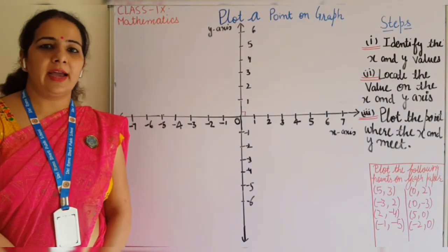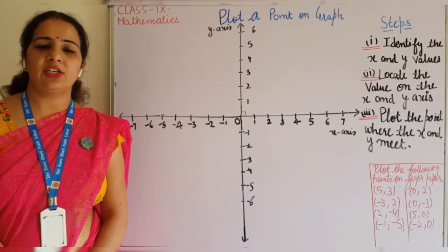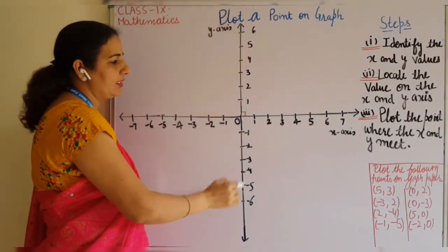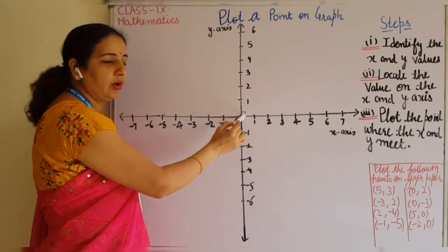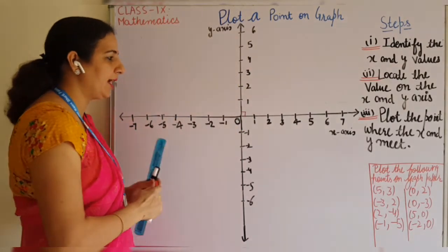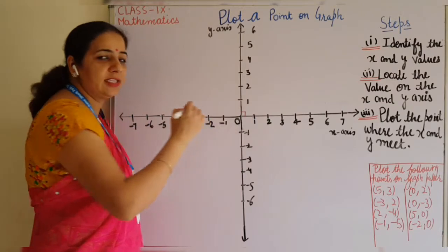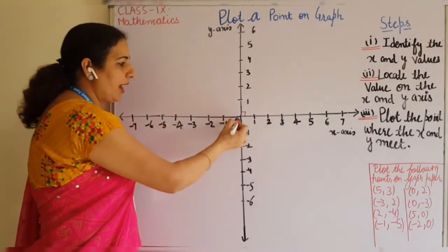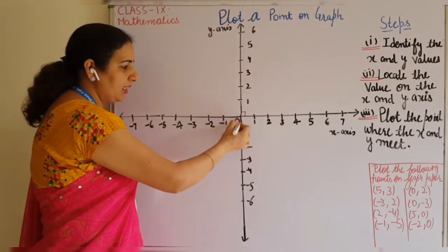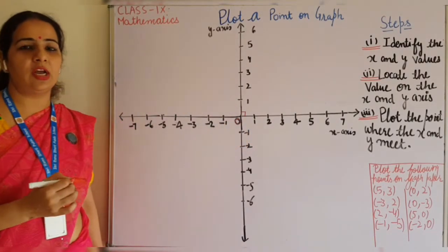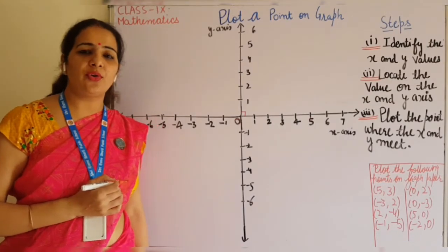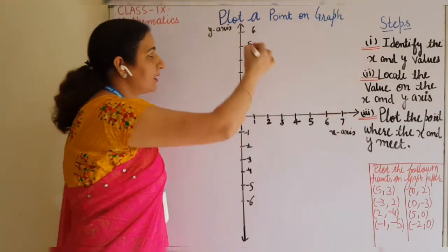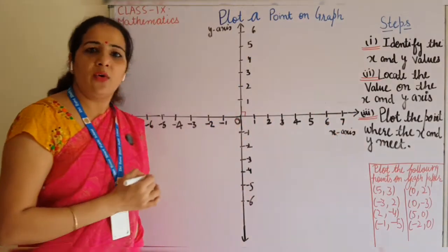Good morning students. As we have already started our chapter coordinate geometry, we have learned that when two axes are perpendicular to each other — perpendicular means 90 degrees — when these two lines intersect each other at a 90 degree angle, the Cartesian plane is formed. The intersection point of these two lines is known as the origin. The horizontal line is the x-axis and the vertical line is the y-axis.